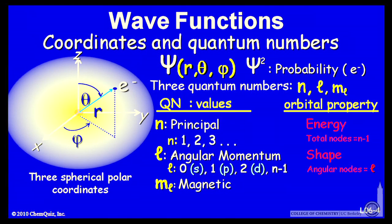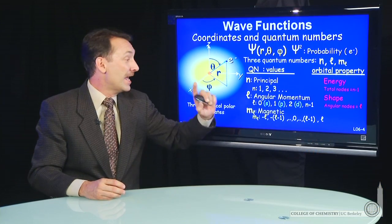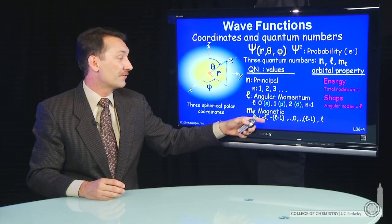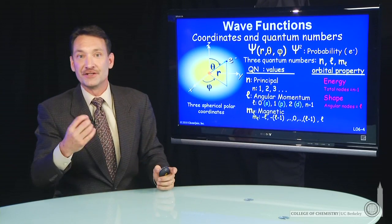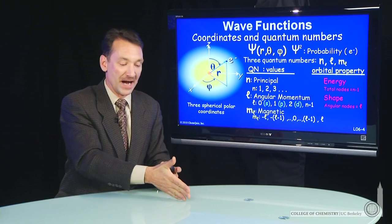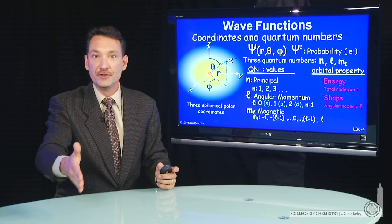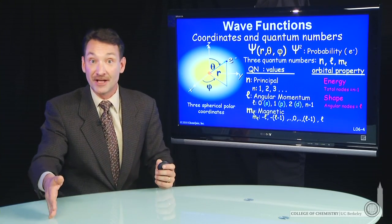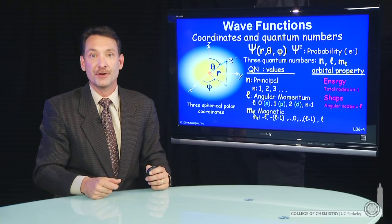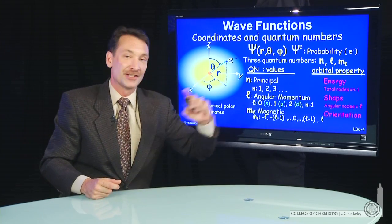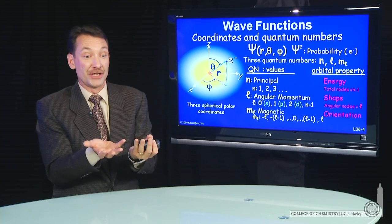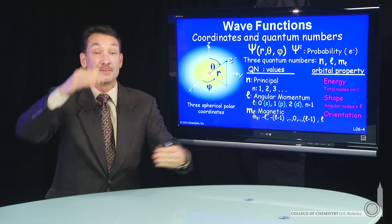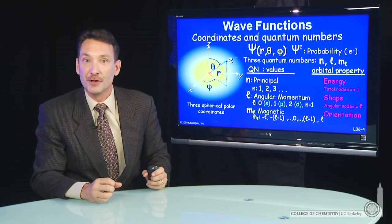Now m sub l, the magnetic quantum number, is the third quantum number. And that's going to tell us something about the orientation of that orbital. And it will have values ranging from minus l to l. So if l is 2, you'll go minus 2, minus 1, 0, 1, 2. From minus l to l in integer steps. So there could be many values of m sub l for a given value of l. And it's going to tell you something about the orientation. If I have a dumbbell shape, maybe I'm along the x-axis, maybe I'm along the z-axis. m sub l will help you determine that.